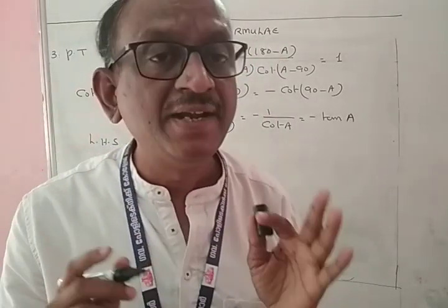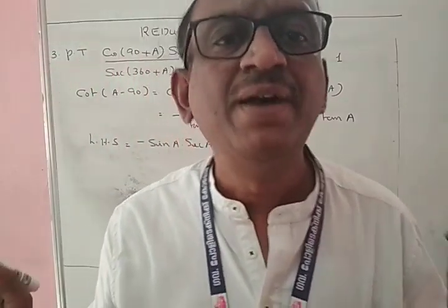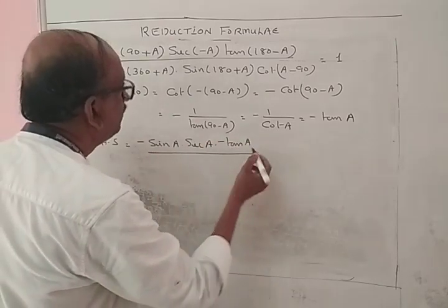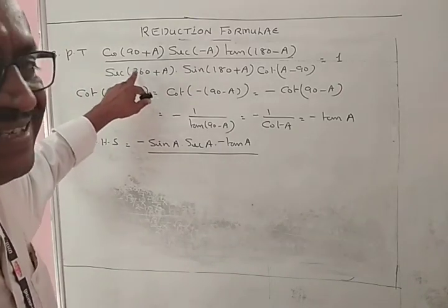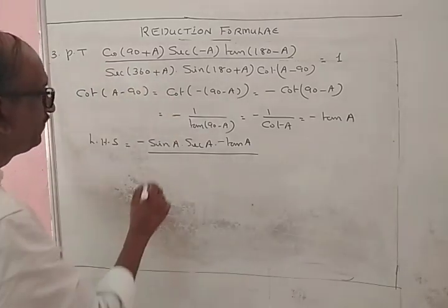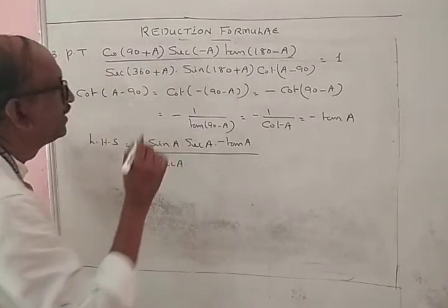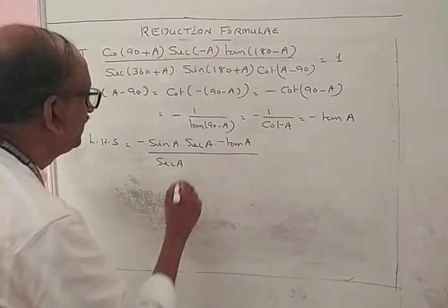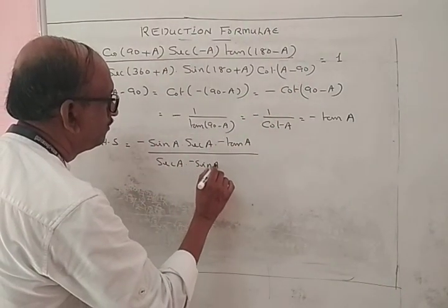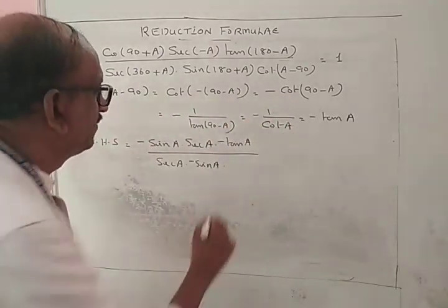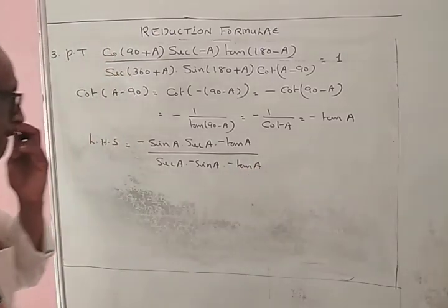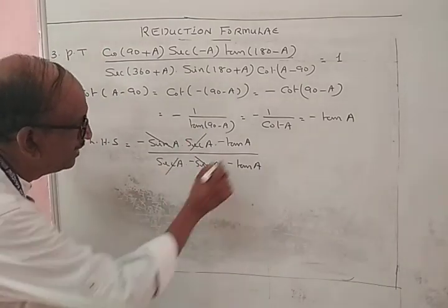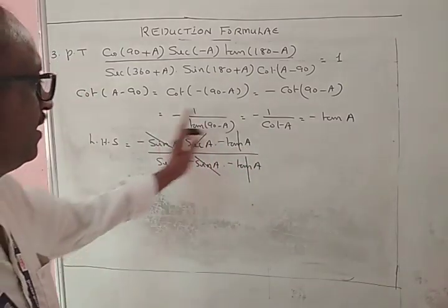sin(180 + A) is again standard result: minus sin A. After substitution, minus sin A and minus sin A cancel, sec and sec cancel, minus tan A and minus tan A cancel. The answer is 1.